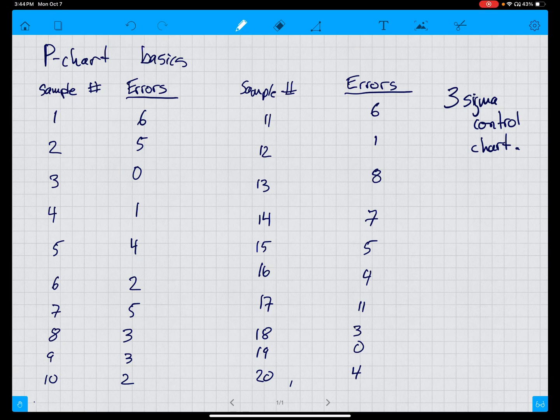In this video we're going to take a look at p-chart basics. P-charts are proportion charts—they are an attribute-based statistical process control chart. They are better and more accurate than c-charts, which are the other attribute ones.